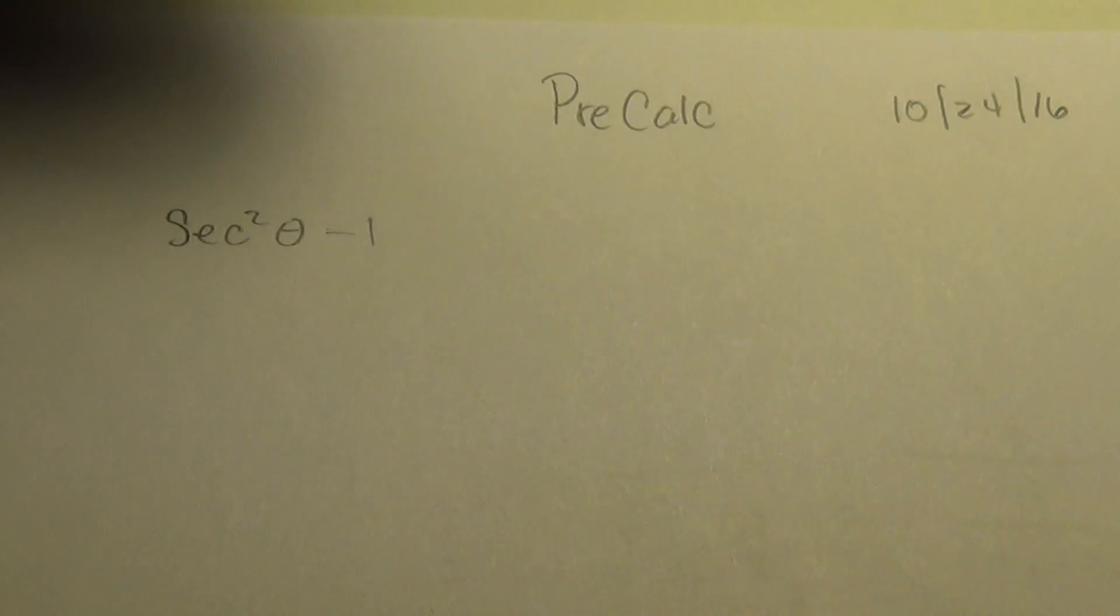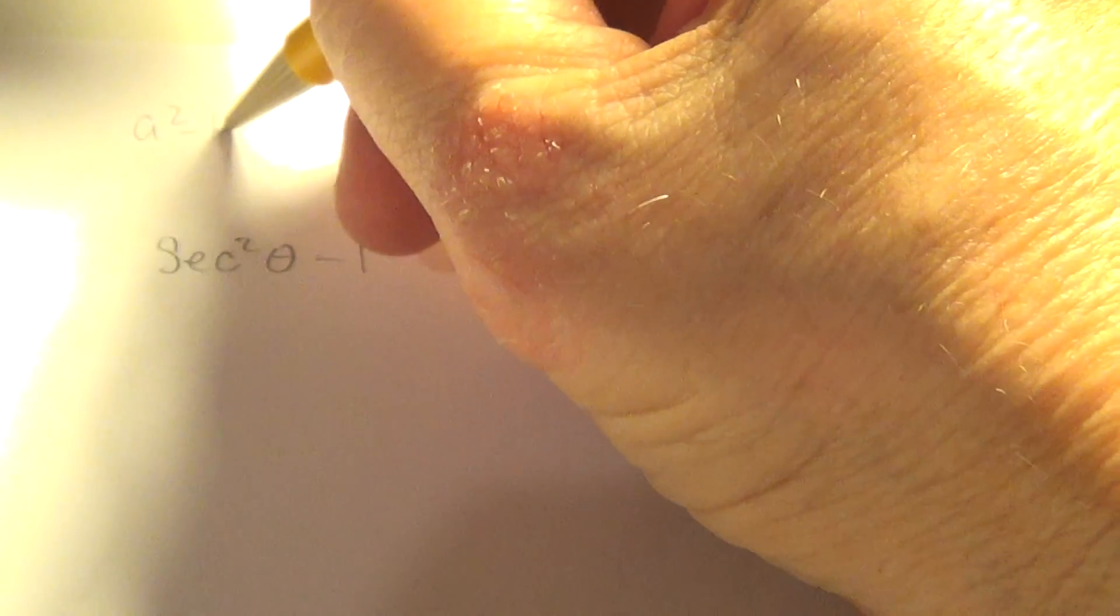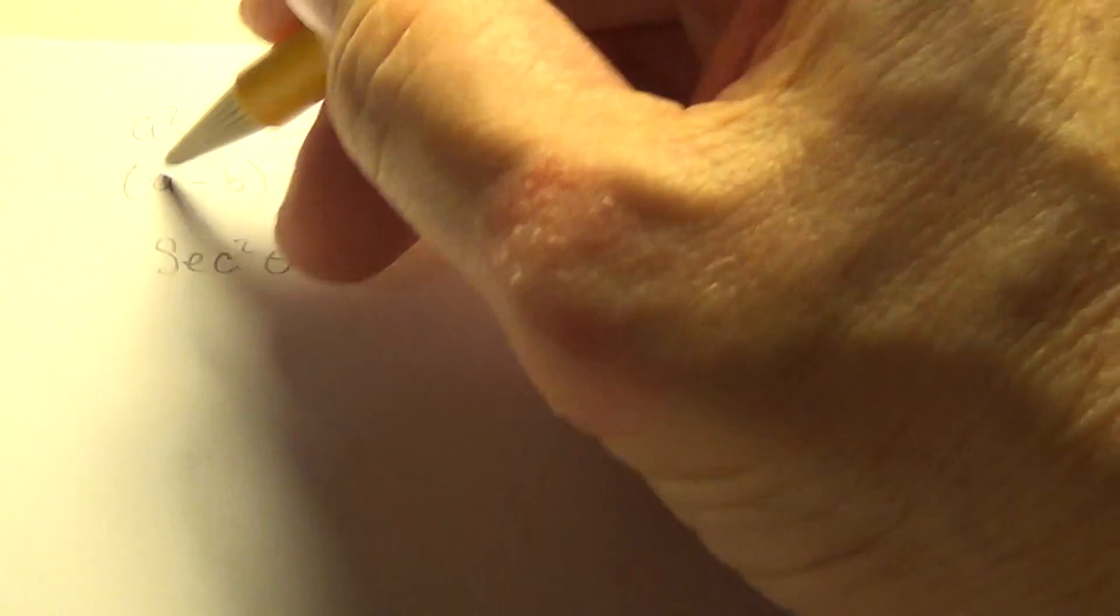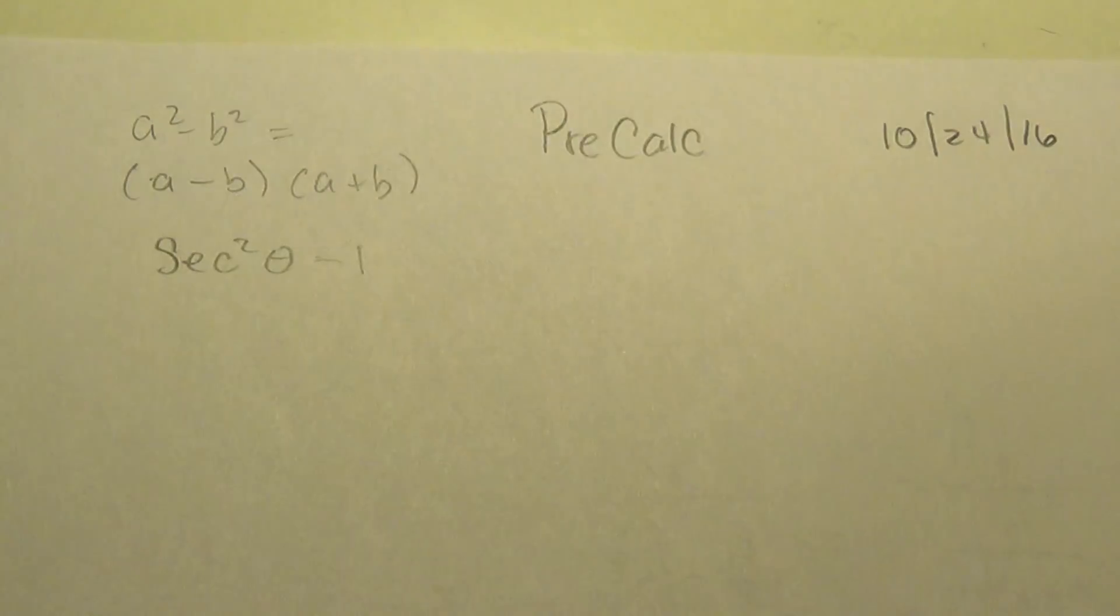So what we're going to do is remember an old truth, a squared minus b squared, and that's called the difference of two squares, and it factors a minus b, a plus b. And if you take the time to distribute the a and then the b, you would see that these two statements are equivalent.